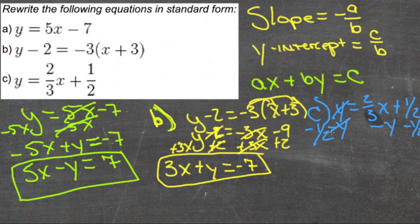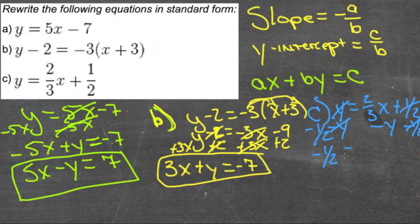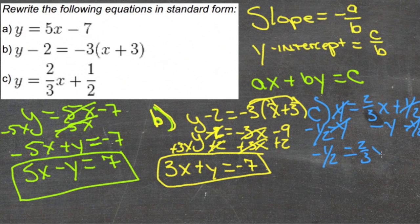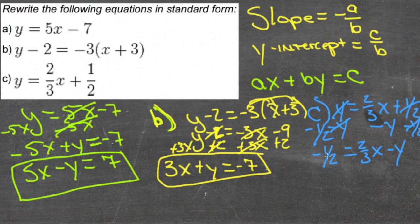Our y's will cancel and our one-halves will cancel. So we'll have negative one-half equals two-thirds x minus y. Now our coefficient of x is positive, x and y are on the same side equal to a constant. We have it in standard form.